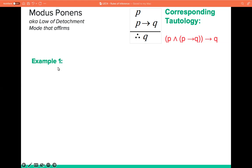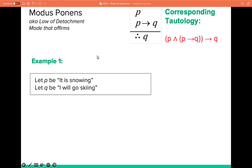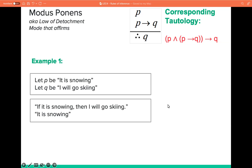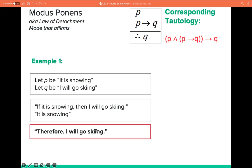Let us try an example. Suppose we have proposition P: it is snowing, and Q: I will go skiing. We have these two premises — if it is snowing, then I will go skiing, and it is snowing. Therefore, I will go skiing.